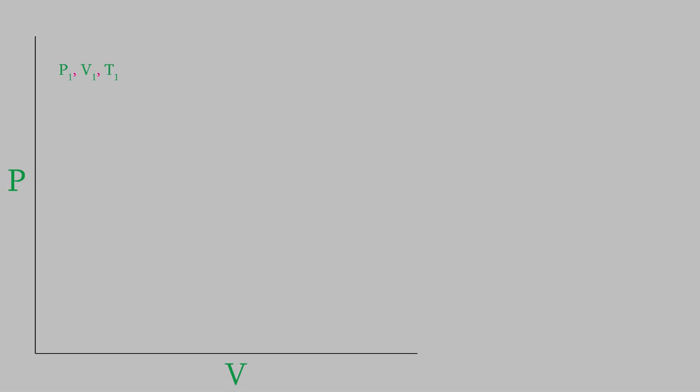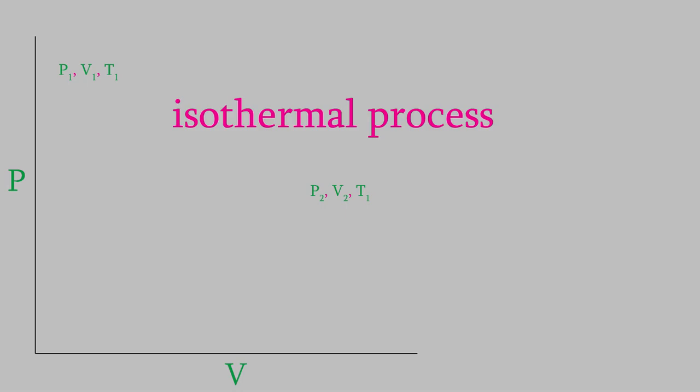Suppose our system starts out at a particular pressure, volume, and temperature, which we'll indicate on the plot using a point labeled P1, V1, T1. Now let's say we change the system reversibly in a way so that the pressure and volume change, but we hold the temperature constant. Because the temperature is constant, we refer to a change like this as an isothermal process. As you saw in video 9, a plot of P versus V at constant temperature gives us a curve called an isotherm, and for an ideal gas it looks like this.